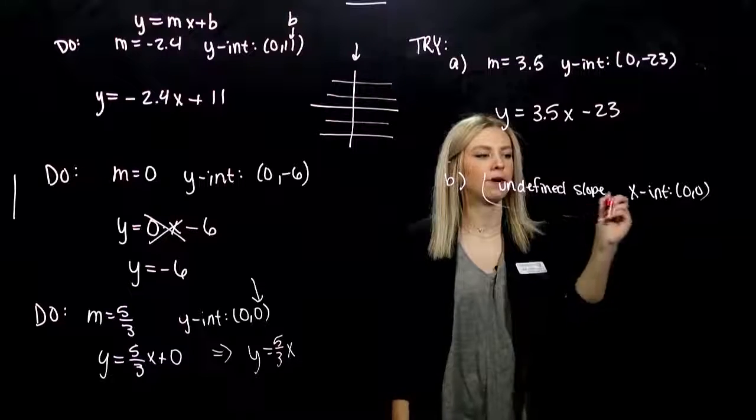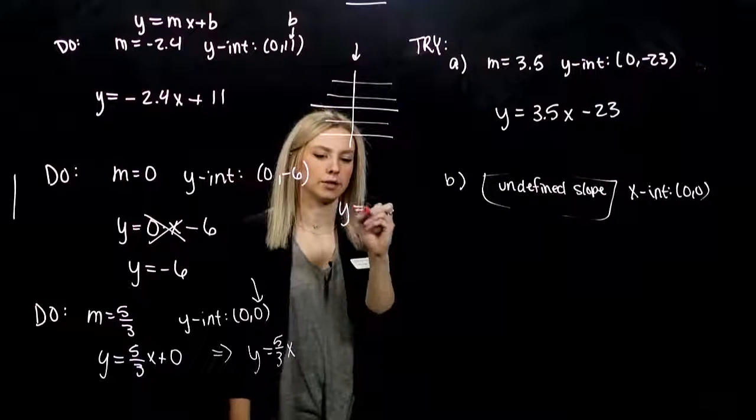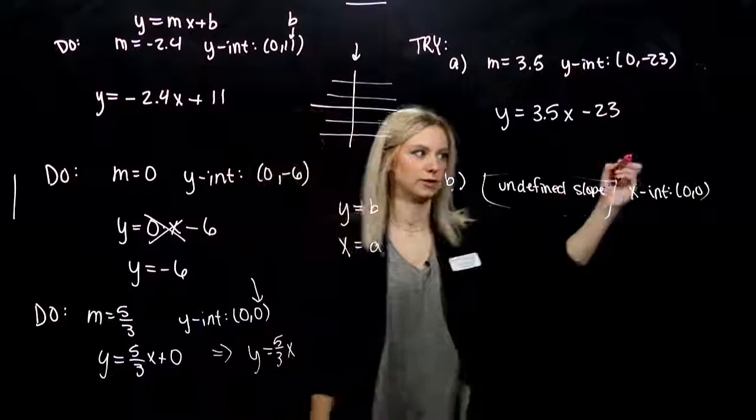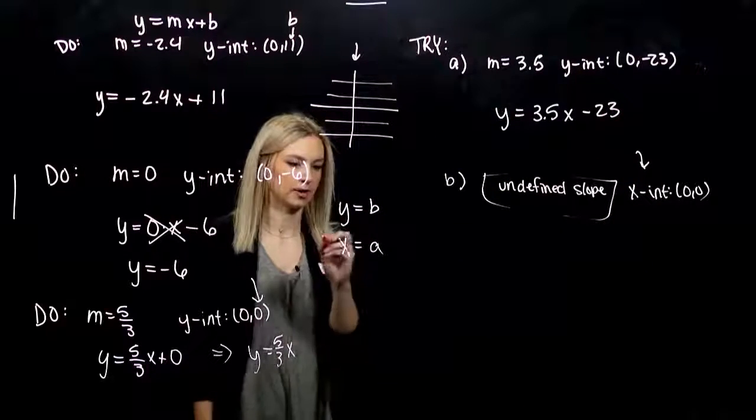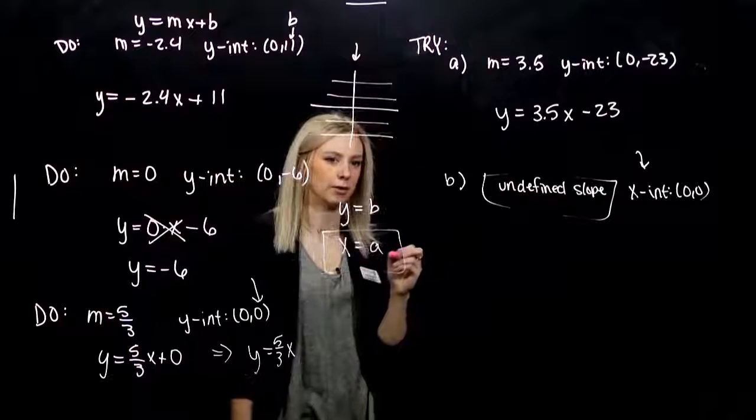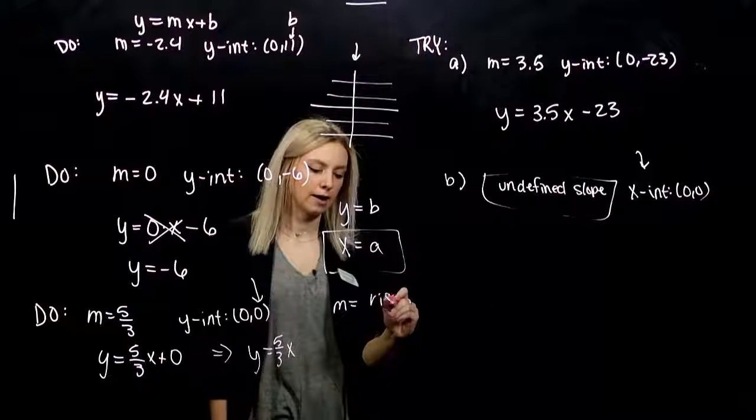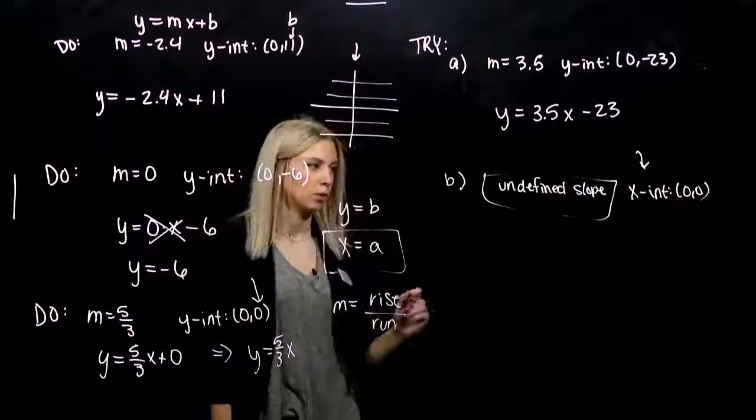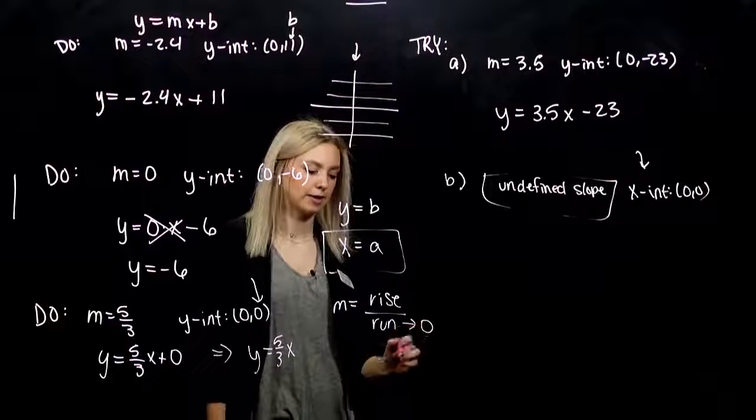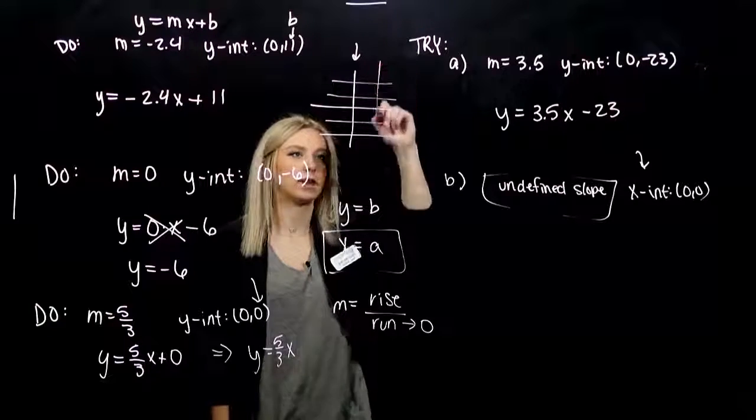For part b, this undefined slope should give you a clue as to what we're dealing with. I have an x-intercept, so I'm going to be choosing this type of equation. When is a number undefined? If I'm looking at my slope, rise over run, when I have something that's undefined, I'm trying to divide by 0. If I'm rising indefinitely and running none, then what kind of line am I looking at? A vertical one, and I have an x-intercept.